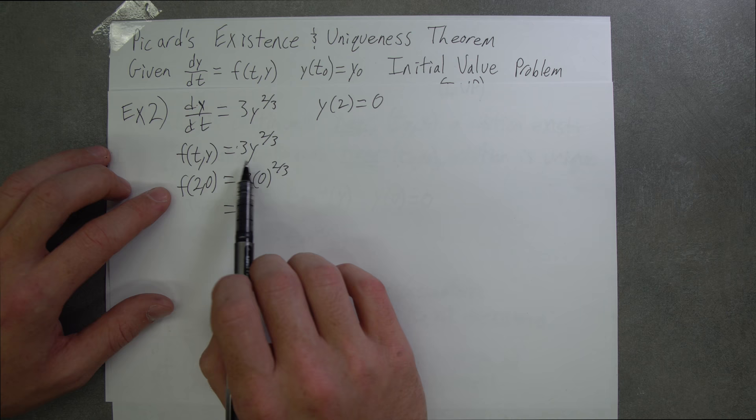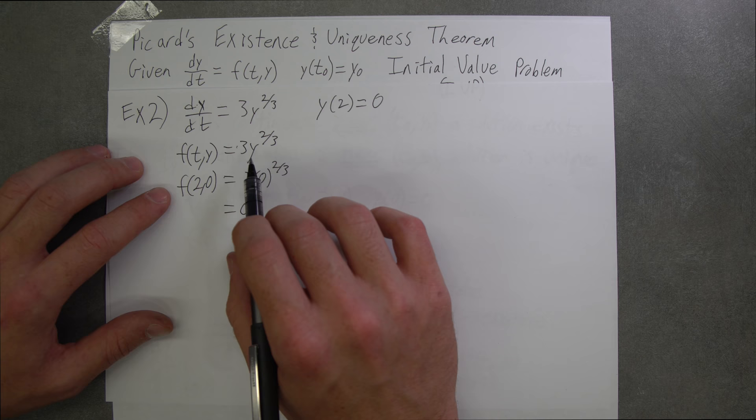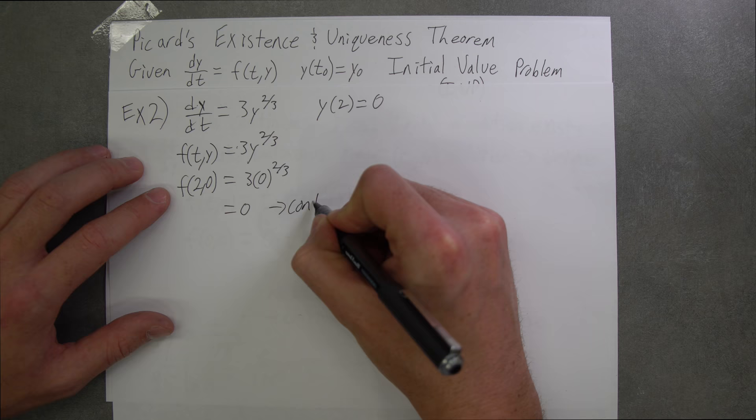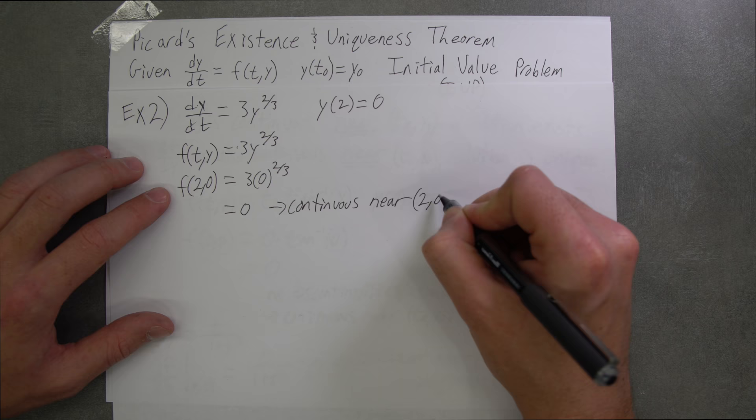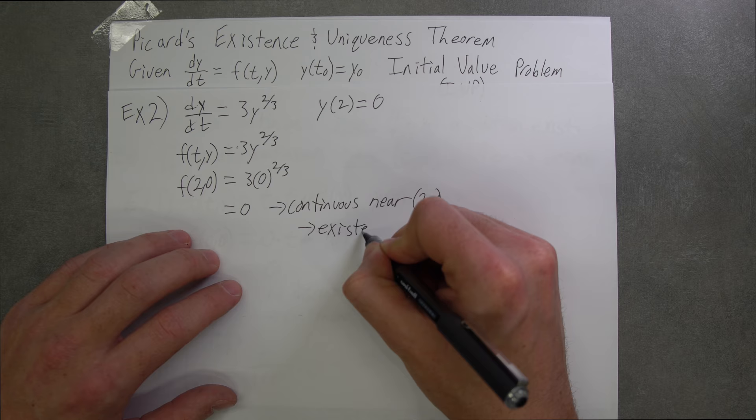Now we know that looking at this function, there are no discontinuities or asymptotes near (2,0). So we know it's continuous near (2,0), and this shows existence.